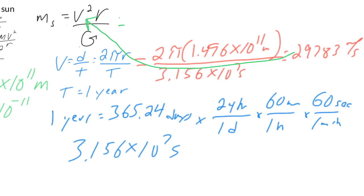So the mass of the Sun we say is equal to 29,783 squared times the distance away, 1.496 times 10 to the 11th meters, and then divide all of that by big G.